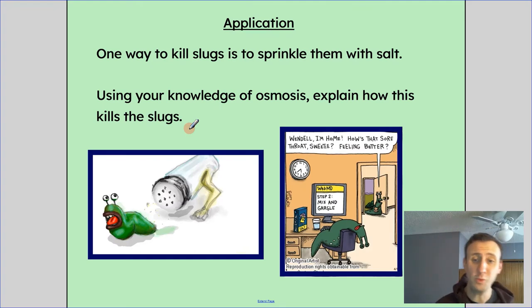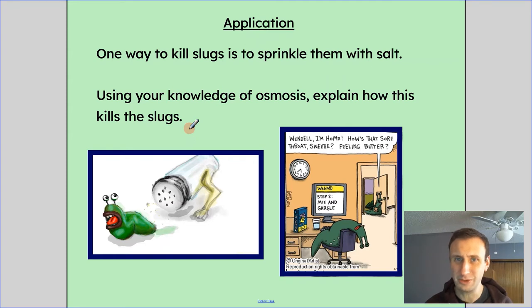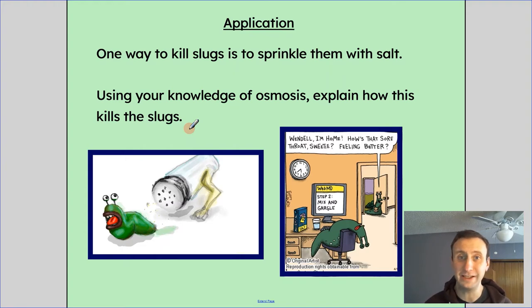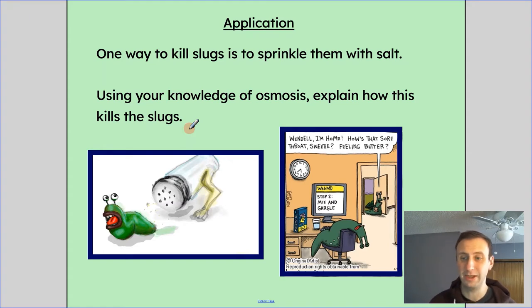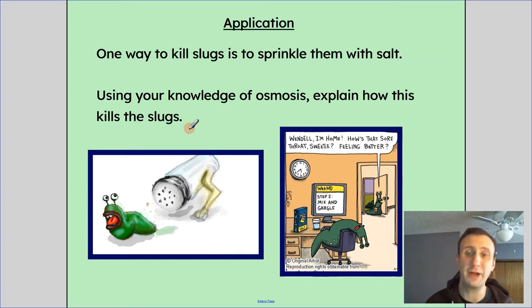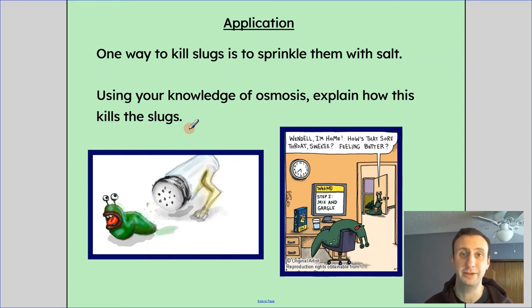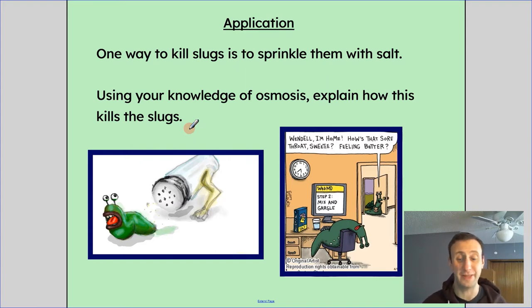Let's talk about an application. One way to kill slugs is to just put some salt on them. Why does that kill the slugs? What's happening is when we put salt on the slugs, we're making the outside of the slug have a really high concentration of salt. Water will then come out of the slug to where there's less water outside. So the salt essentially helps draw the water out, because outside of the slug you have this really concentrated salt solution, and inside you have the normal slug innards, which are less concentrated for salt. Water will travel out by osmosis from the inside of the slug to the outside, and the slugs will shrivel up.